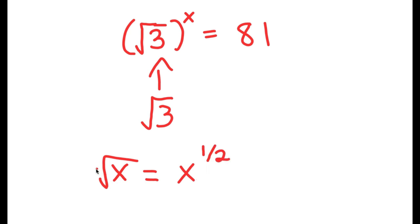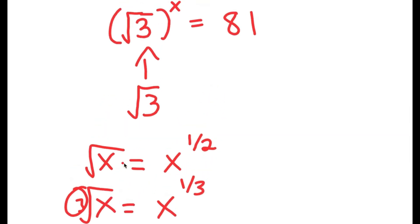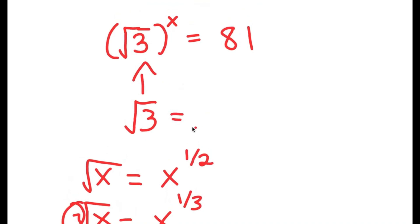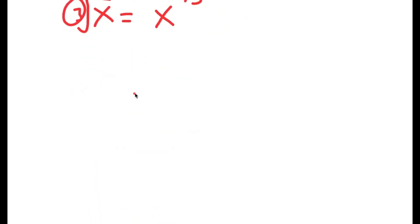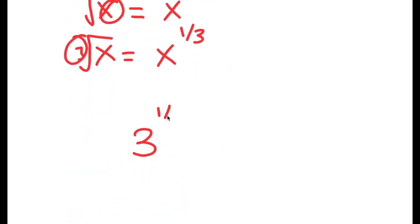The cube root of a number is that number to the power of 1 over 3, because we have a 3. So the square root of 3 — we can think of 3 as x in this case — and we can rewrite this as 3 to the power of 1 half. Now if I substitute in 3 to the power of 1 half for square root of 3, I get 3 to the power of 1 half to the power of x is equal to 81.